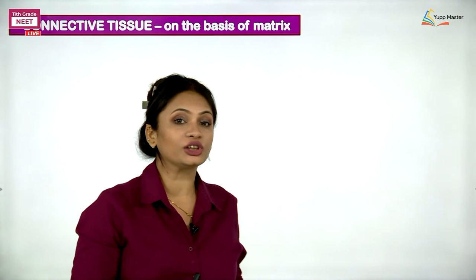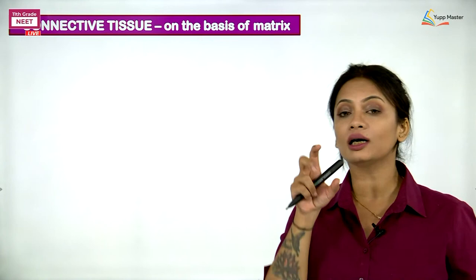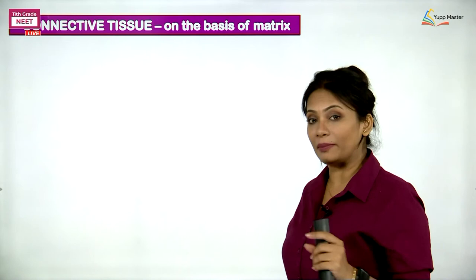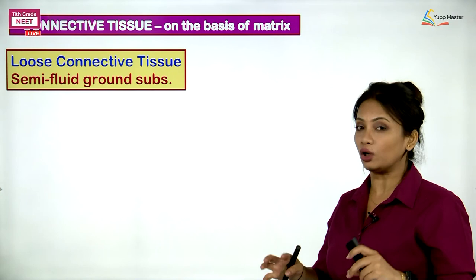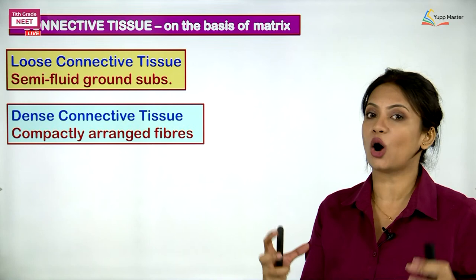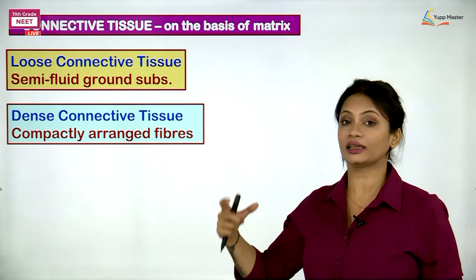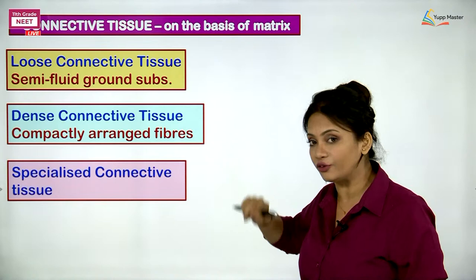Do you remember connective tissue was classified on the basis of the matrix? The filling between the two cells. Connective tissue, on the basis of matrix, was of three types: the first being loose connective tissue, where all the substances are just randomly placed.